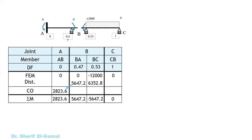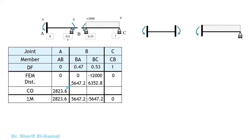To draw the shear, reactions, and bending moment diagrams, we first place the calculated moments on the drawing with their correct directions. Positive moments (clockwise) are drawn upward; negative moments (counterclockwise) are drawn downward, on the head side of the arrow. At support A the moment is 2,823.6 N·m (positive, up), at joint B the moment is 5,647.2 N·m (negative, down), and at C the moment is zero.